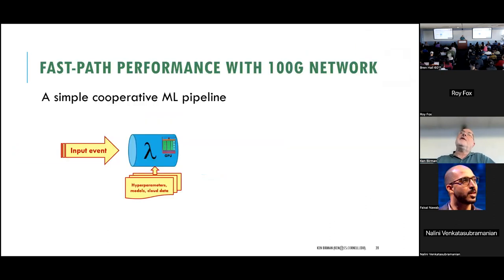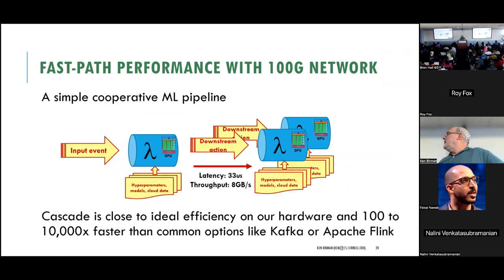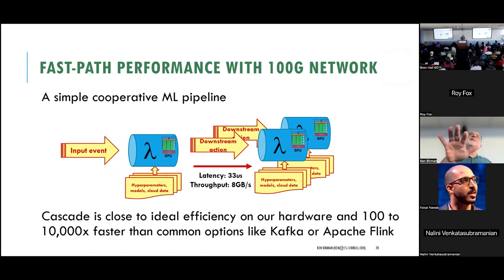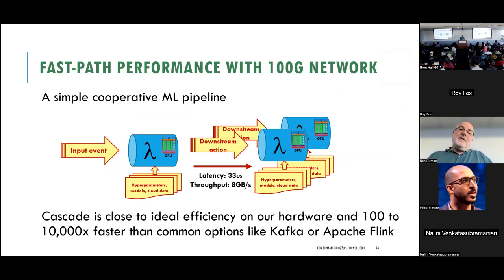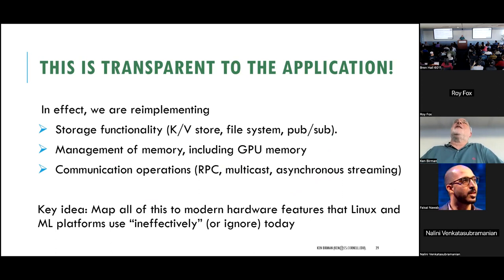By having the data needed for the ML computation already present in the GPU except for the incoming photo, and sending that photo straight into the GPU with GPU Direct, we cut what would have been many seconds down to fractions of a millisecond. That's what Cascade does — it's all secure. Handoffs from stage to stage come down to numbers like 33 microseconds, and data rates as high as 8 gigabytes per second, which is roughly the speed of the internal bus inside your computer — basically memory-to-memory copy speed.